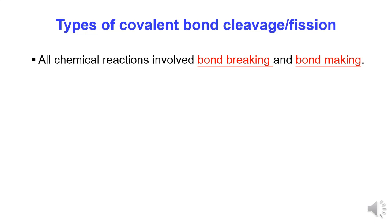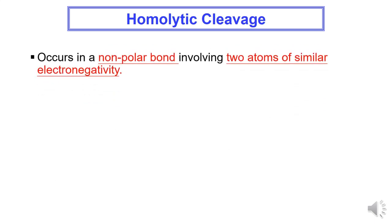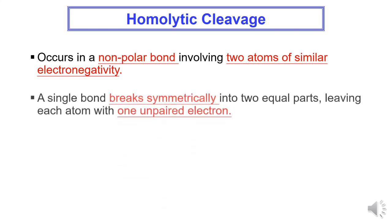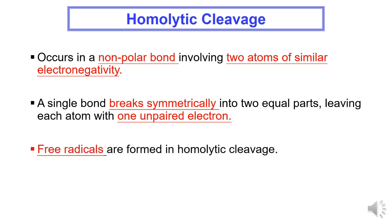Types of covalent bond cleavage. All chemical reactions involve bond breaking and bond making. There are two types of covalent bond cleavage: number 1, homolytic cleavage, and number 2, heterolytic cleavage.